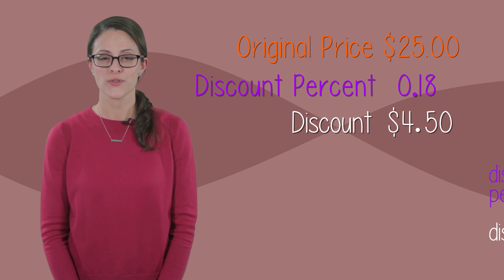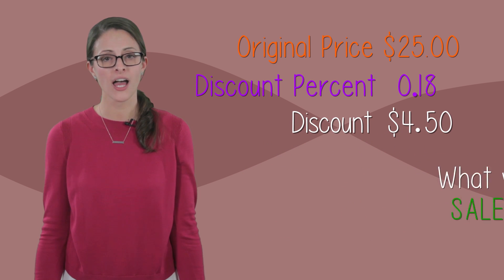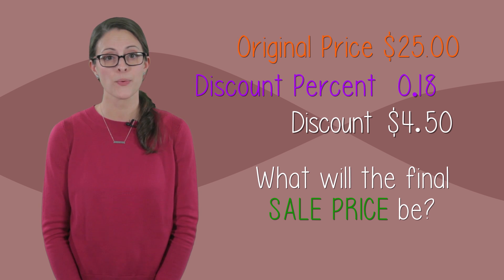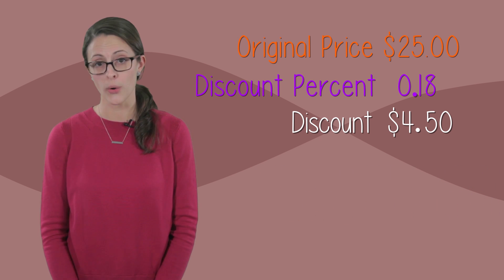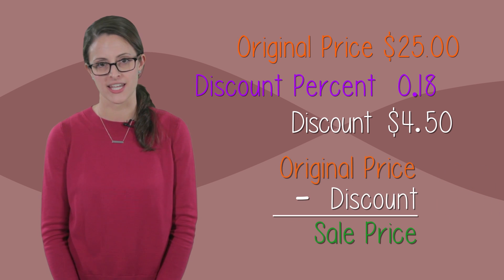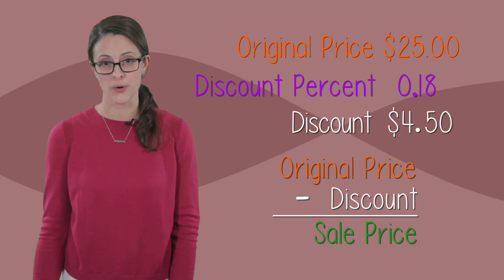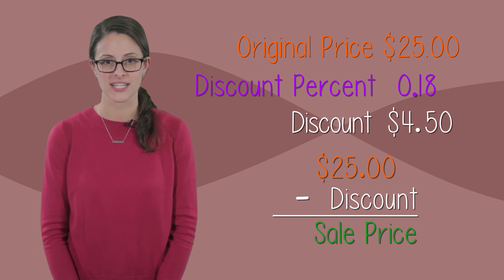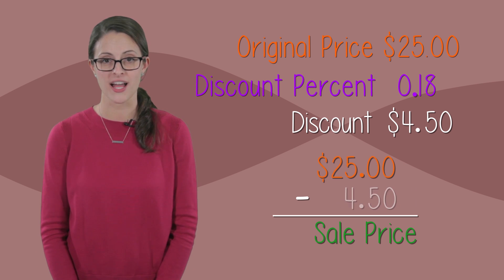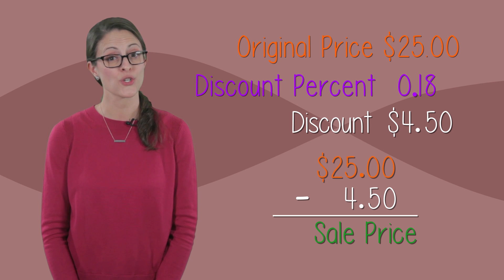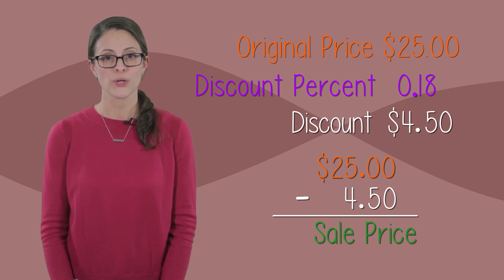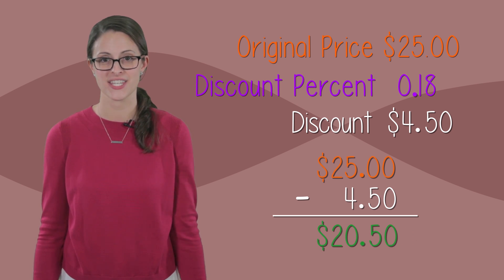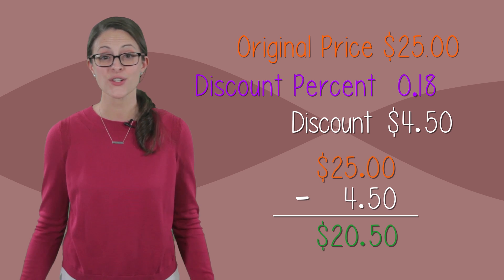But look back at our original question — what do we want to know? We're looking for the sale price. Our sale price is our total price minus our discount. So we have our total price, $25, minus our discount of $4.50. Be sure to line up the decimals. We do the work and end up with $20.50. That's our sale price.